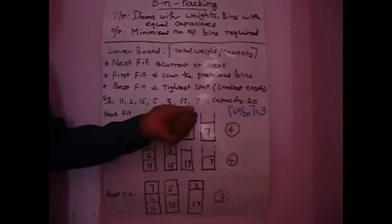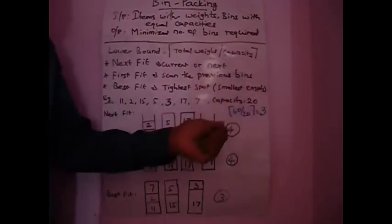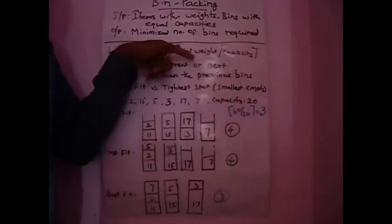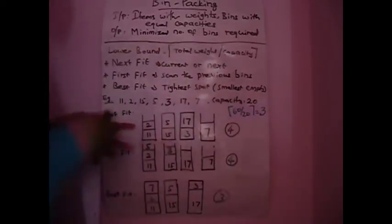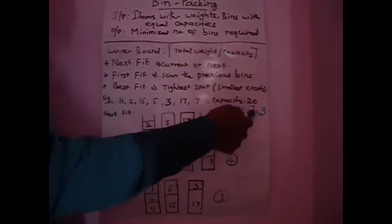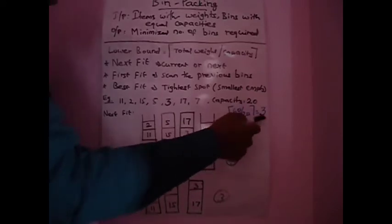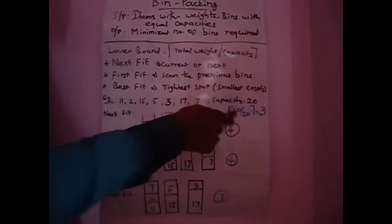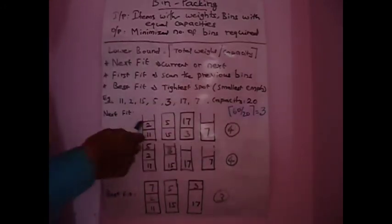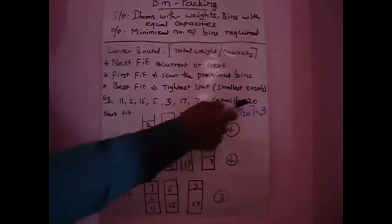Consider this sample instance: we are given seven items with their weights and bins with capacity 20. For a rough calculation of the minimum number of bins required, we use the formula: total weight divided by capacity. Total weight is 60 divided by capacity 20, so we need at least three bins to accommodate all items.